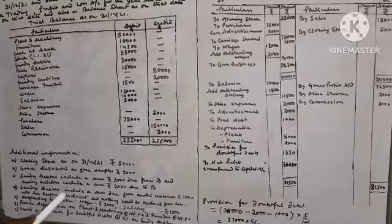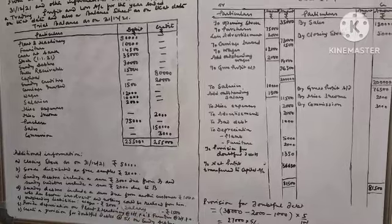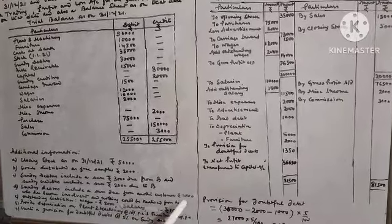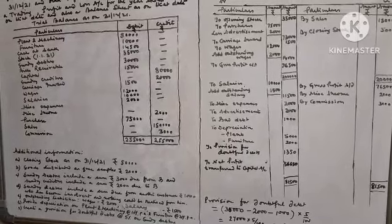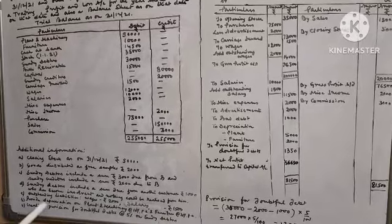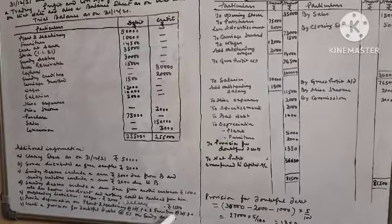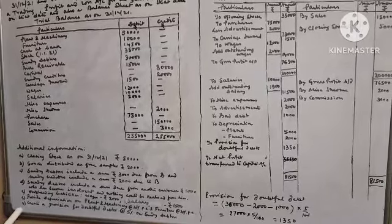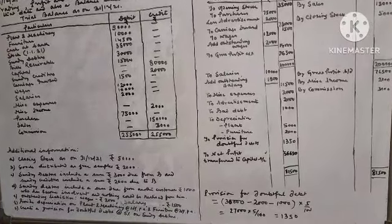(D) Sundry debtors include a sum of Rs. 1,000 due from another customer who has become insolvent and nothing could be realized from him. (E) Outstanding liabilities: wages Rs. 2,000, salary Rs. 1,500. (F) Provide depreciation on plant and machinery at 10% per annum and furniture at 20% per annum. (G) Create a provision for doubtful debts at 5% on sundry debtors.